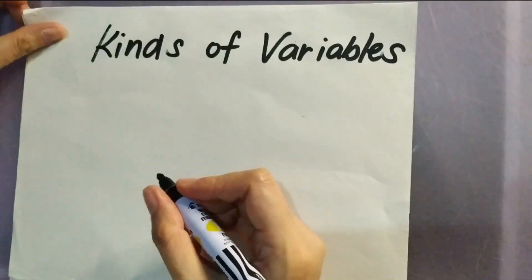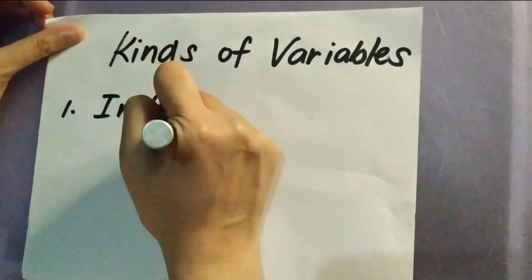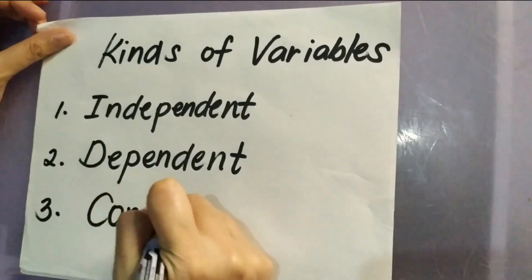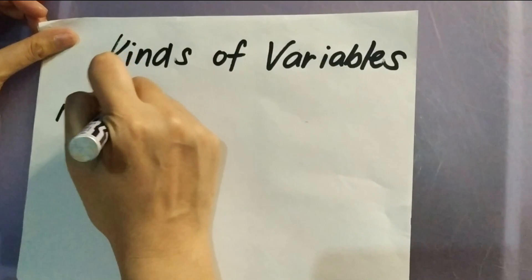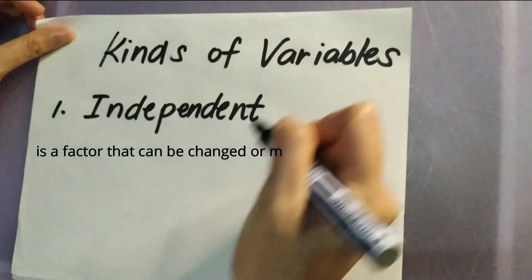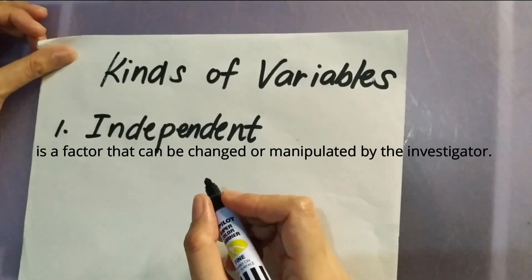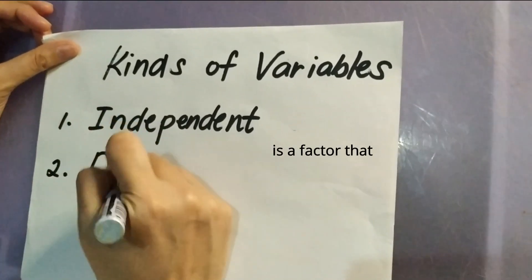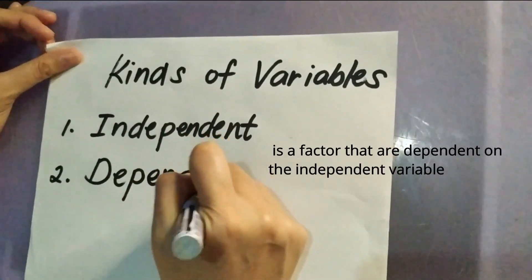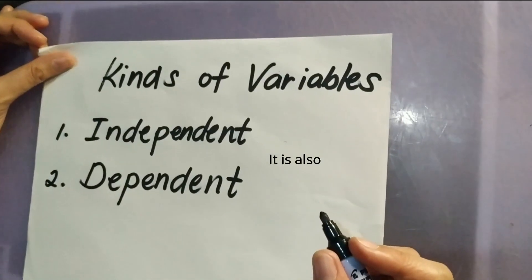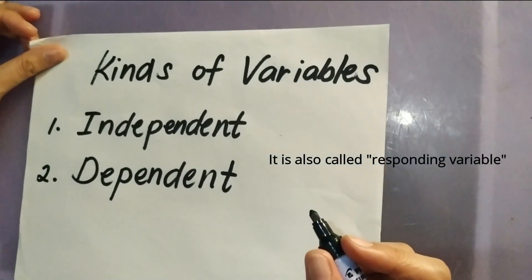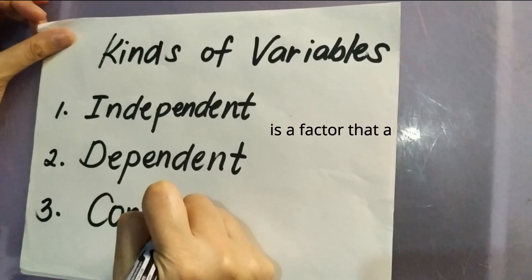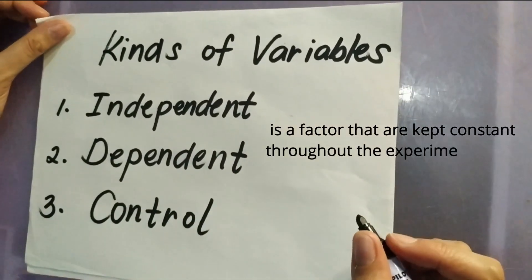There are three kinds of variables: independent variable, dependent variable, and control variable. The independent variable is a factor that can be changed or manipulated by the investigator. The dependent variable is a factor that depends on the independent variable — also called the responding variable. The control variable is a factor that is kept constant throughout the experiment.